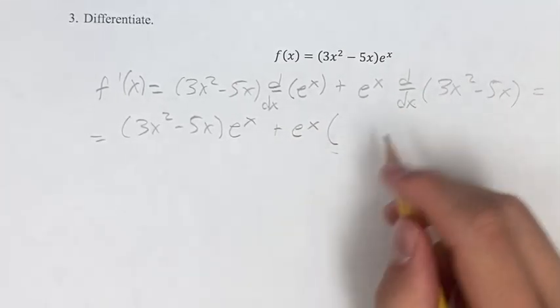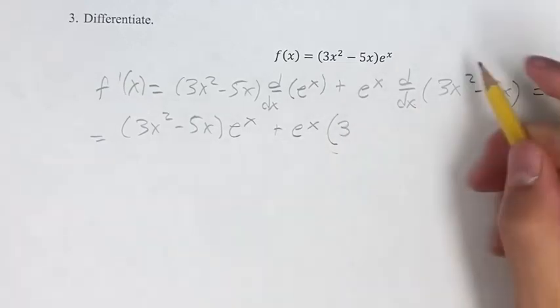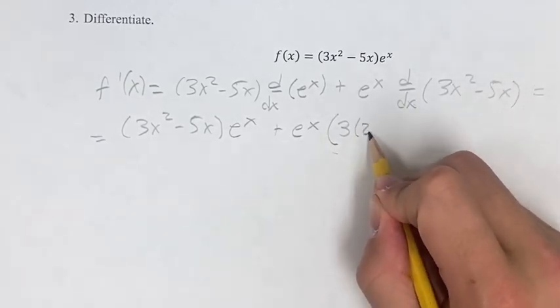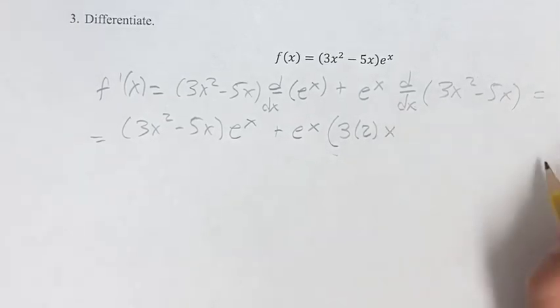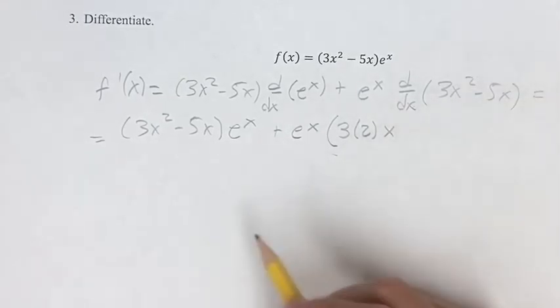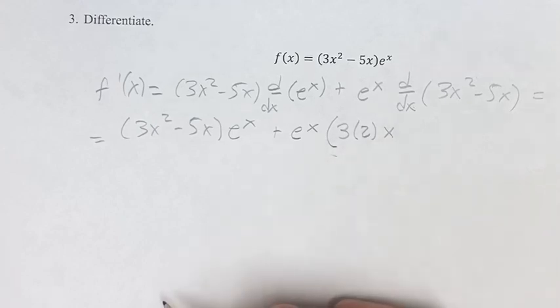So for this power function, you take the coefficient and bring it out in front, take that 2, bring it down, and multiply it by the coefficient. And then your new exponent is going to be 2 minus 1, which is x to the first power, which is just x. This term, whenever you have a linear term, the derivative is just the coefficient.